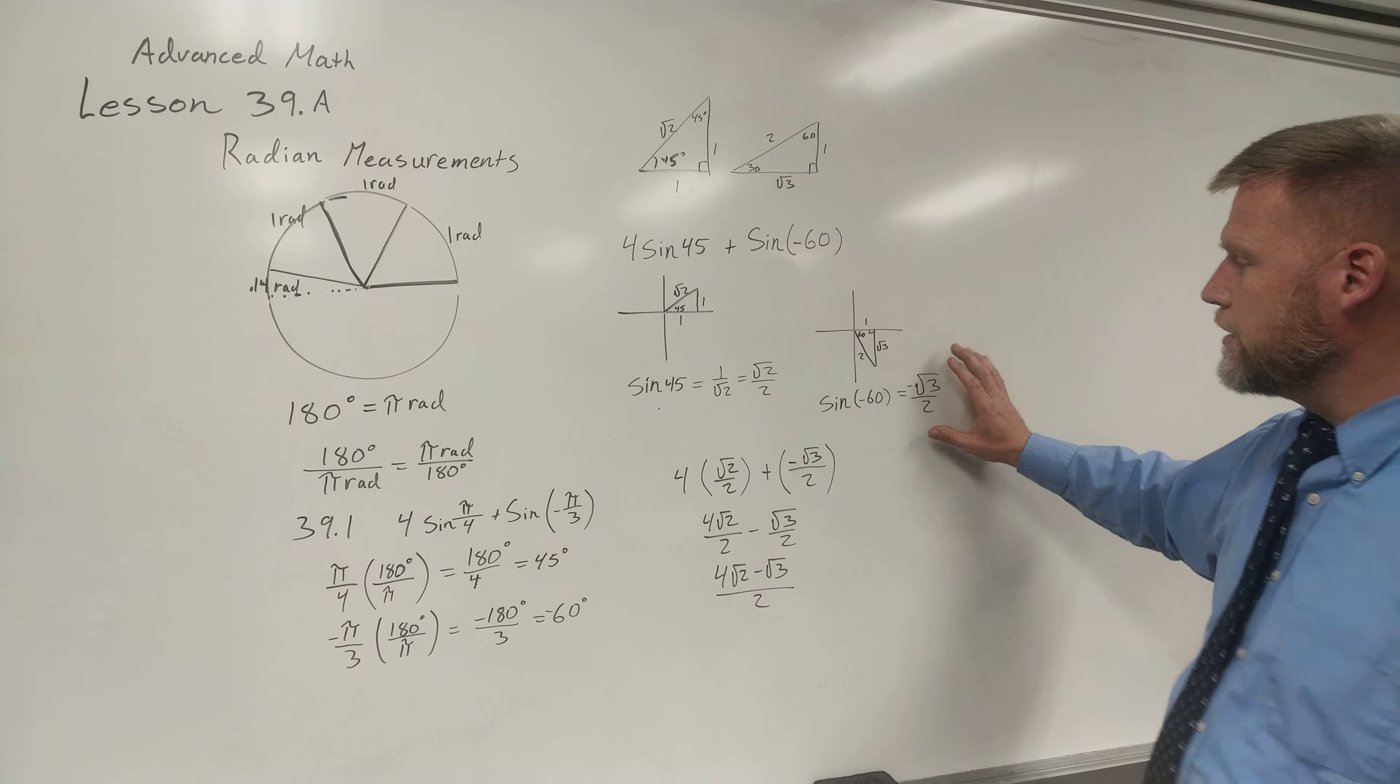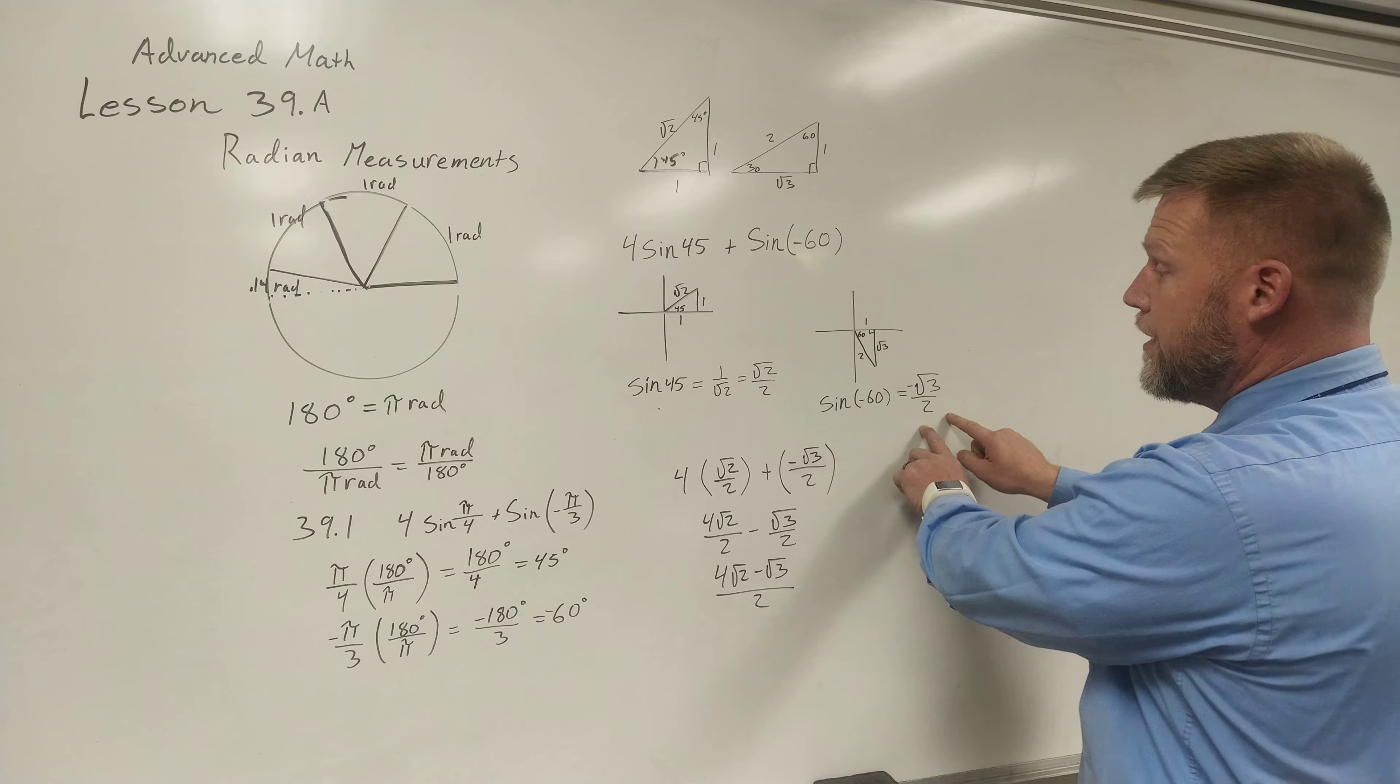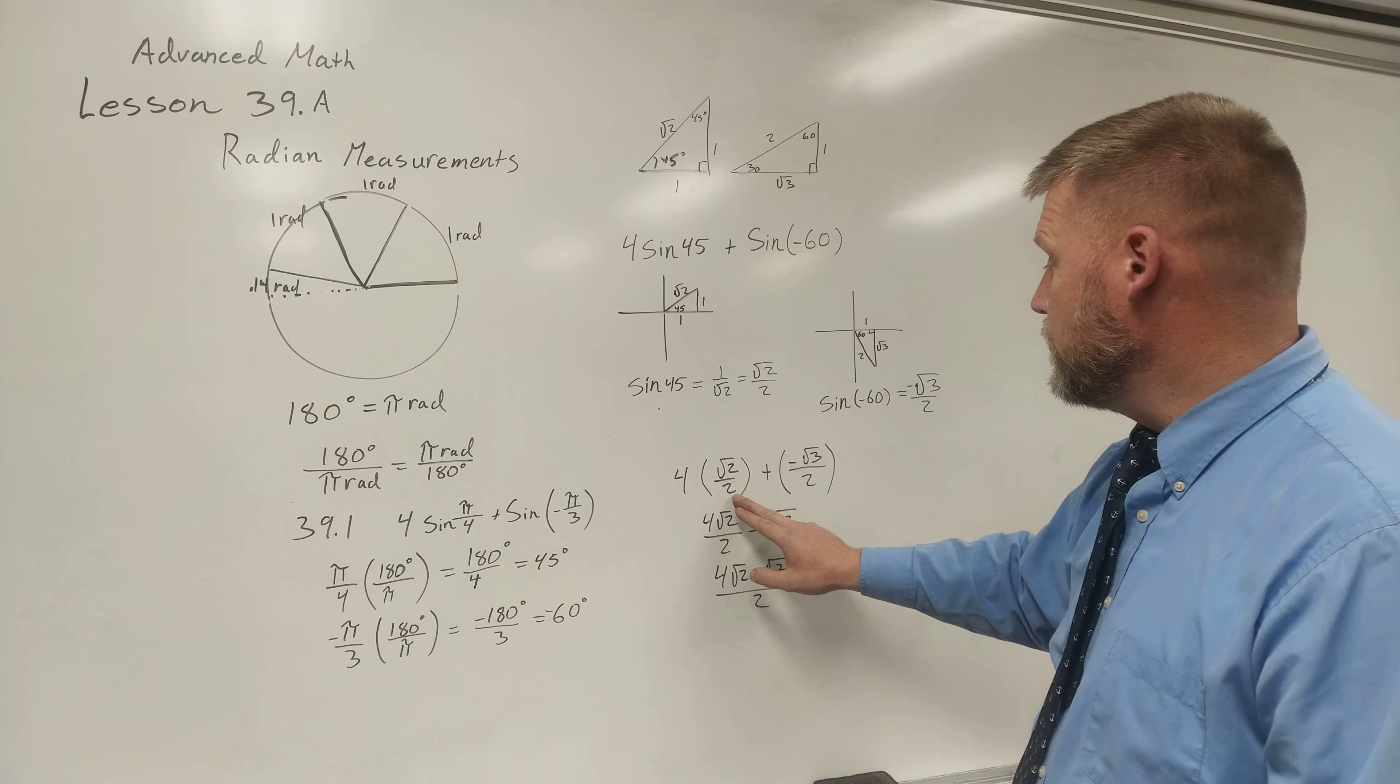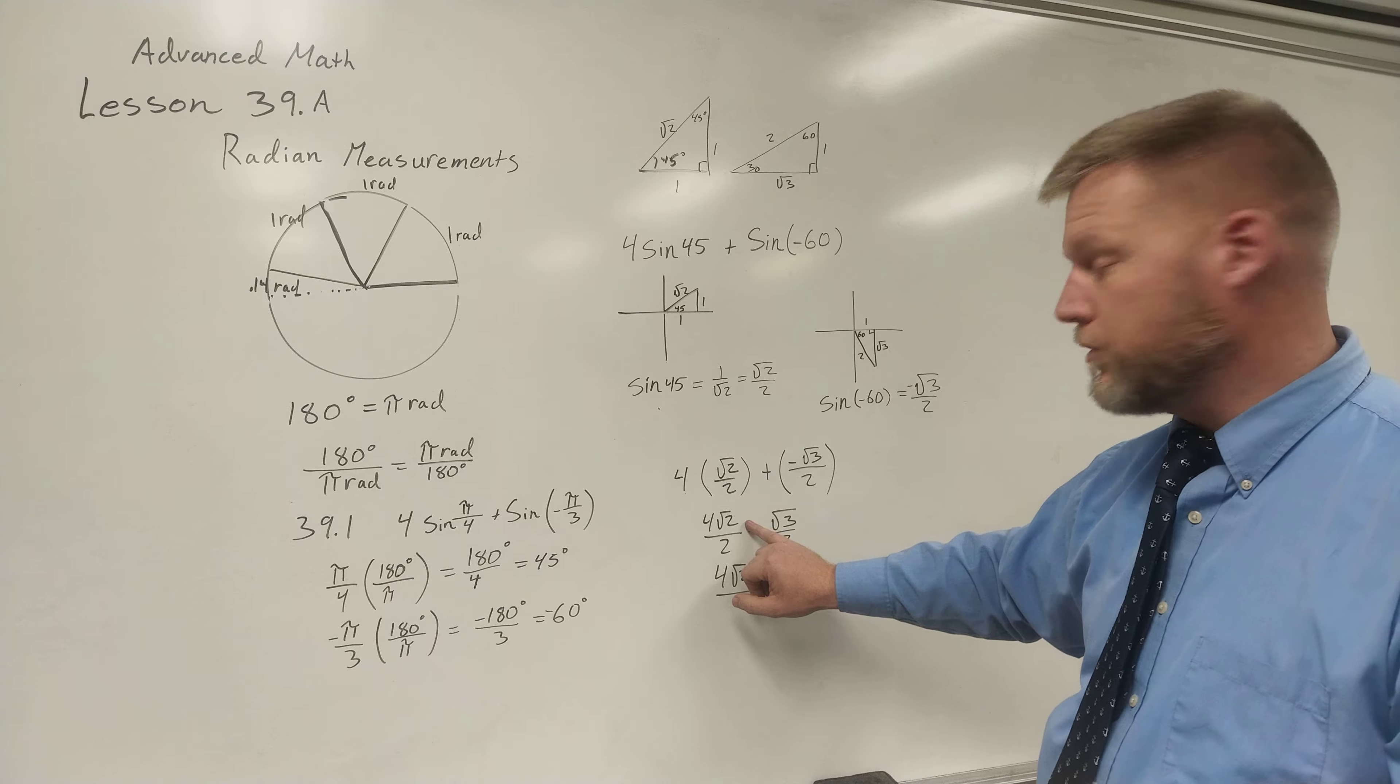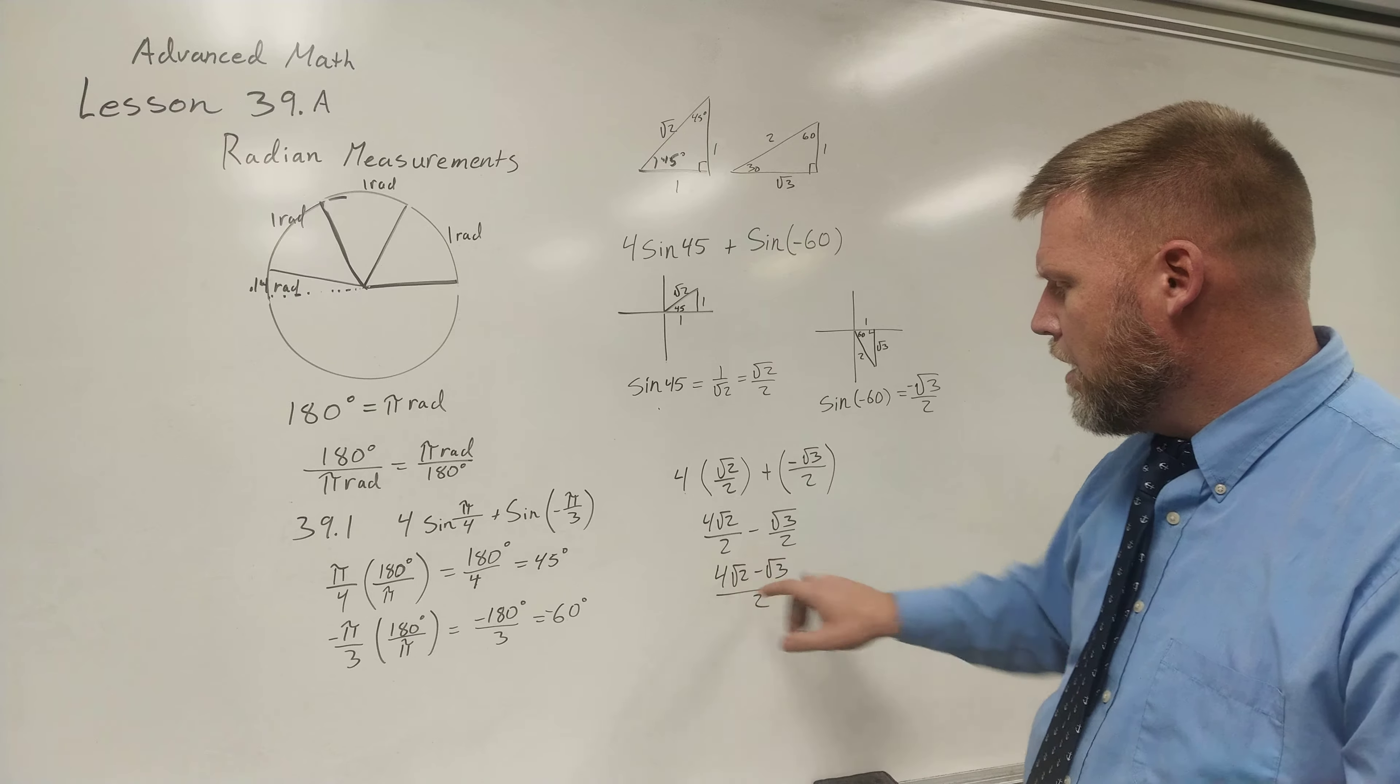Once I have this, I can then substitute these two values back in. This one for the sine of 60 and this one for the sine of 45. That's going to give me 4 times the √2/2 plus a negative √3/2. When I multiply 4 times √2, I get 4√2/2. And when I do a positive and a negative, I'm ending up with a negative value.